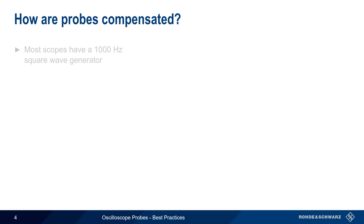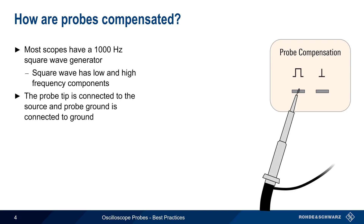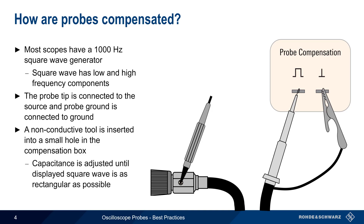Most oscilloscopes have a built-in 1000 Hz square wave generator for probe compensation. Square or rectangular waves are used because they have both high-frequency and low-frequency components. The probe tip is connected to the signal source and the probe ground lead is connected to ground. The oscilloscope is then configured to display the probe compensation output. A non-conductive tool is inserted into the small hole in the probe compensation box and rotated to adjust the probe's capacitance, such that the displayed square wave is as rectangular as possible.